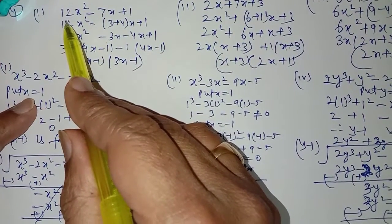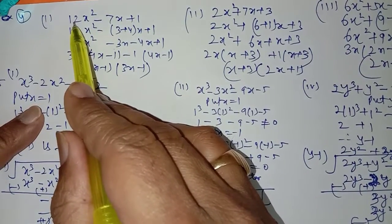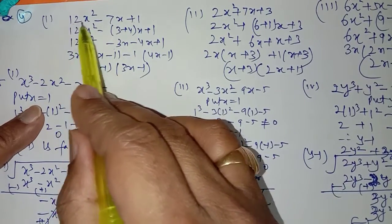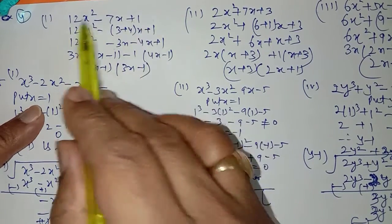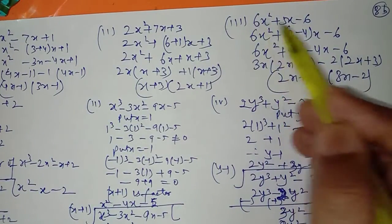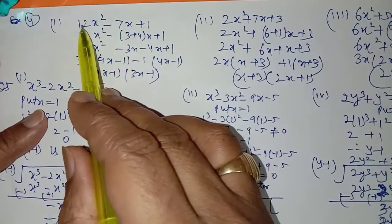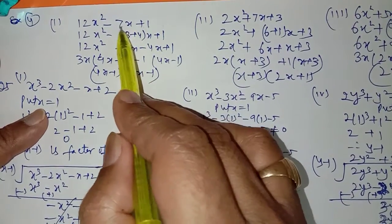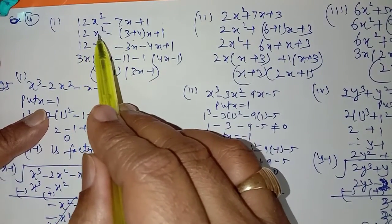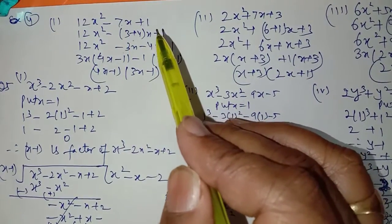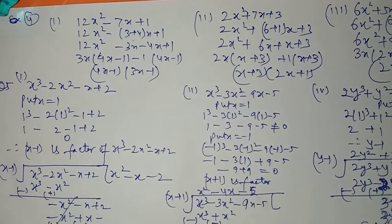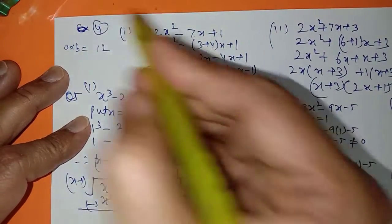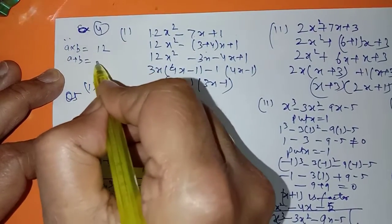For the first polynomial, call coefficients a, b, c. You need two numbers whose product is 12 × 1 = 12 and whose sum is 7. Those two numbers are 3 and 4, since 3 × 4 = 12 and 3 + 4 = 7. For the second polynomial, you need two numbers whose product is 6 and whose sum is 7 — that gives 6 and 1. For the third polynomial, the product is −36 and the difference is 5, giving 9 and −4.